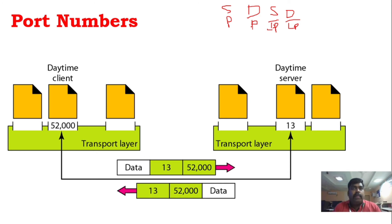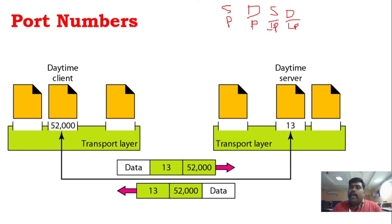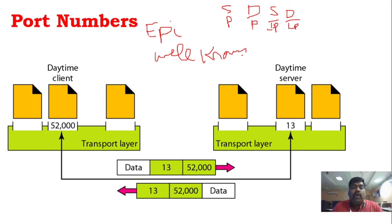Before seeing the diagram, let me give you some basic information about port numbers. Port numbers mostly work on the client-server model — a request-response model. There are two types of port numbers: ephemeral port numbers and well-known port numbers.